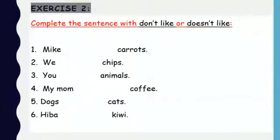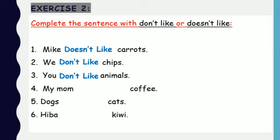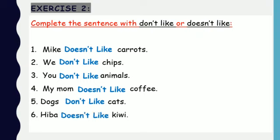Now for the second exercise: complete the sentences with 'don't like' or 'doesn't like'. Pause and complete, then play to hear the answers. Answers: Mike doesn't like carrots, we don't like chips, you don't like animals, my mom doesn't like coffee, dogs don't like cats, Heba doesn't like kiwi. Excellent job if you got them right!